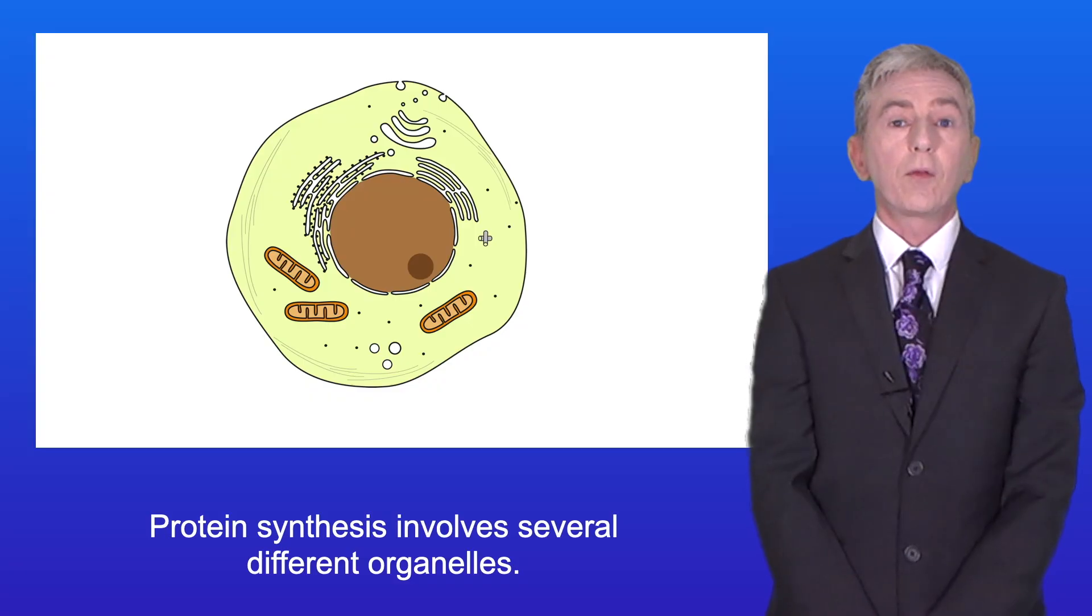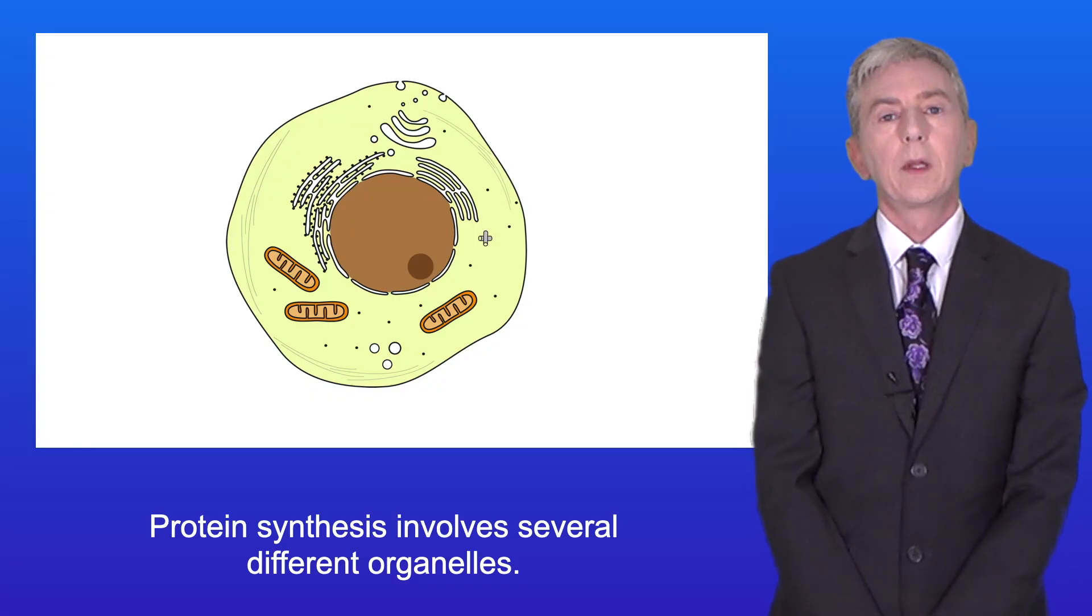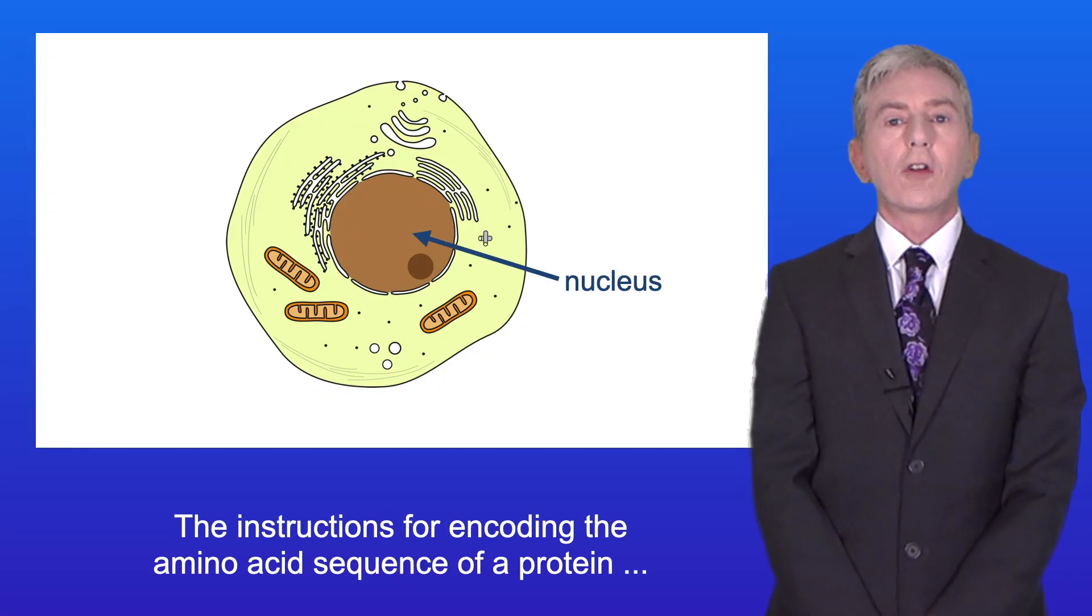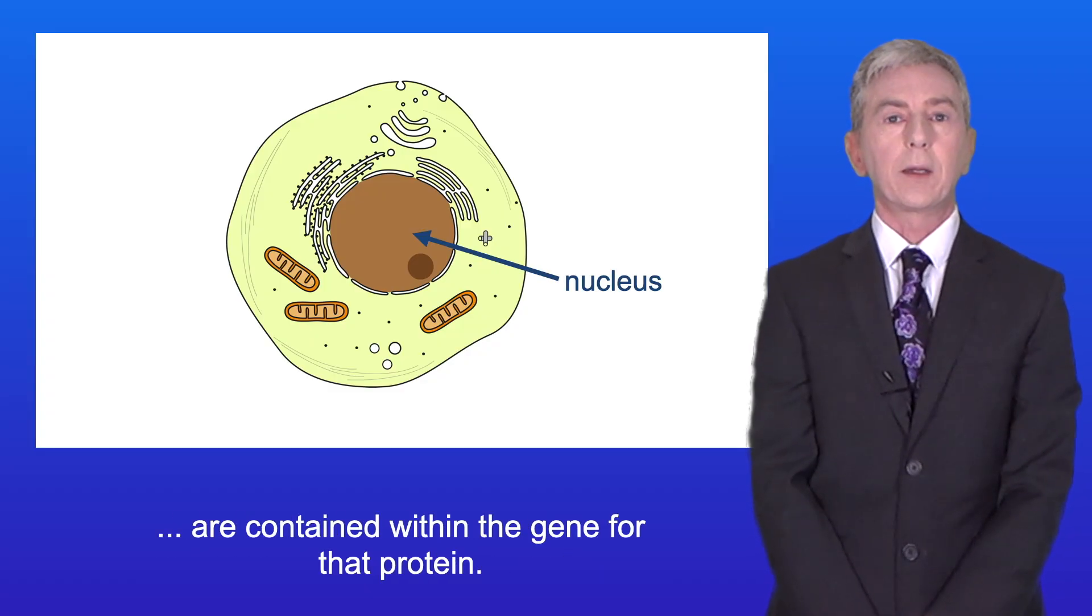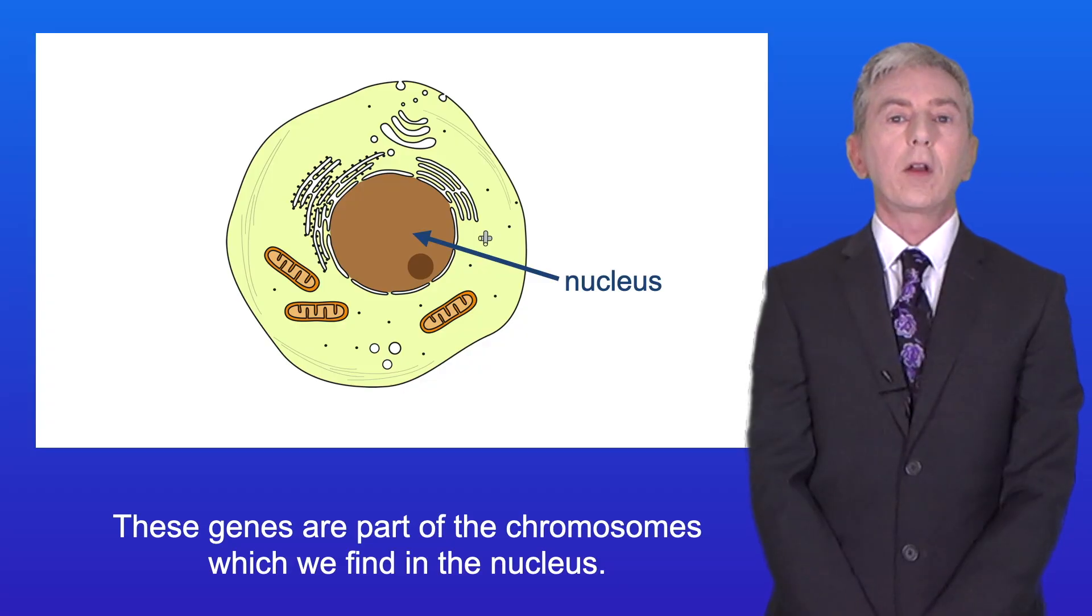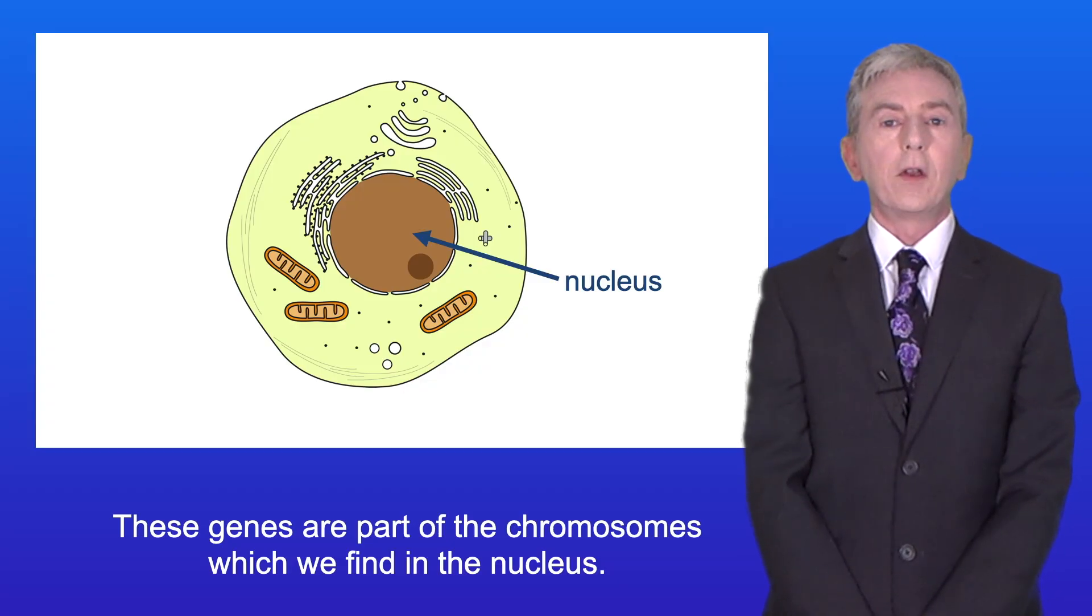Protein synthesis involves several different organelles. Firstly, the instructions for encoding the amino acid sequence of a protein are contained within the gene for that protein. And these genes are part of the chromosomes which we find in the nucleus.